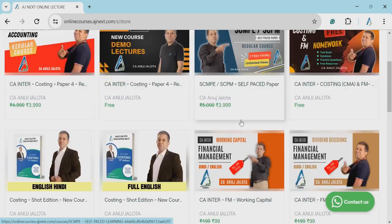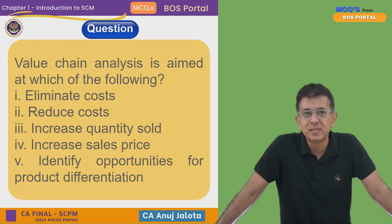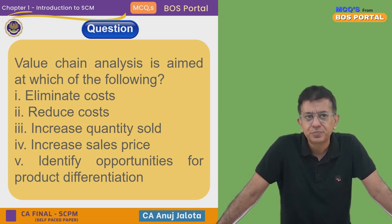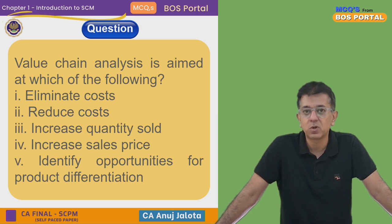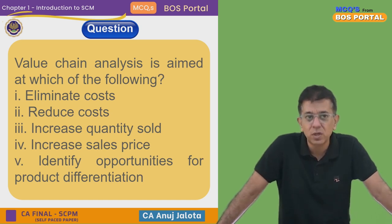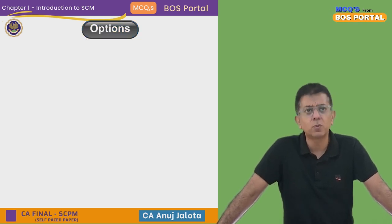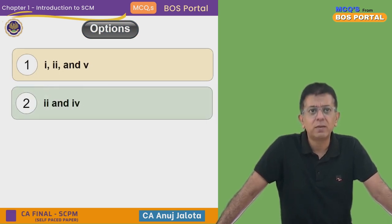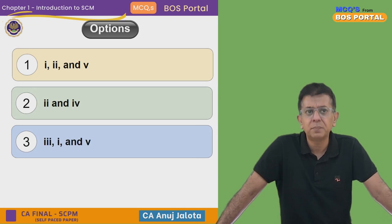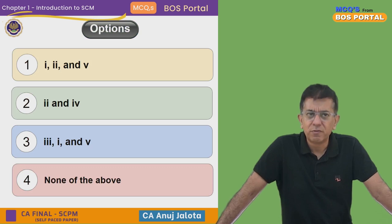This is Chapter 1: Introduction to SCM. The question for today is: value chain analysis is aimed at which of the following? First, eliminate the cost; second, reduce the cost; third, increase quantity sold; fourth, increase the sales price; fifth, identify the opportunities for product differentiation. The four options are: one, two, and five; two and four; three, one, and five; and lastly, none of the above.